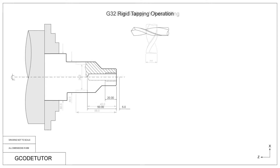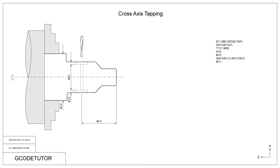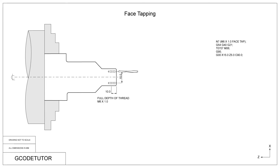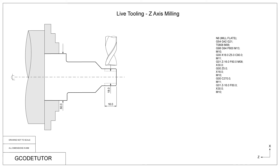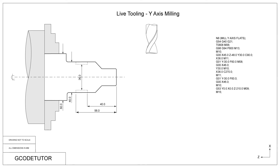We discuss different operations such as rigid tapping, not only in the main centre line of the part but also cross holes and tapping along the face of the part in a bolt hole circle. I also discuss milling using both the Z-axis and the Y-axis.